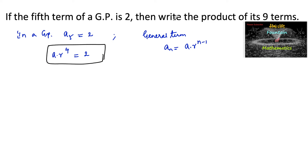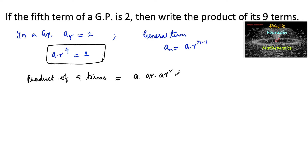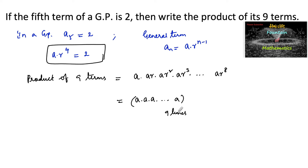We need to find the product of 9 terms. The product of 9 terms is: a into ar into ar squared into ar cubed, and so on up to the ninth term, which is ar to the power 8. This equals a multiplied 9 times, and r to the powers 1 through 8 multiplied together.